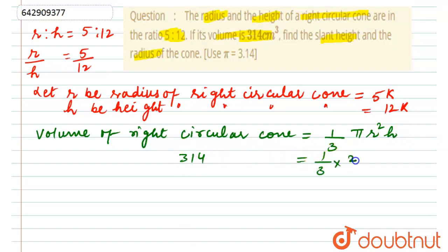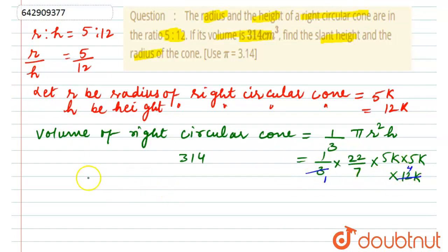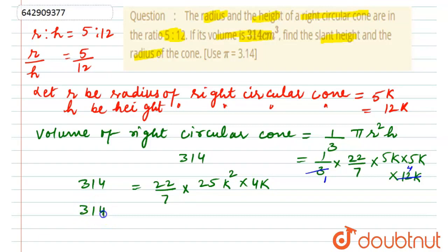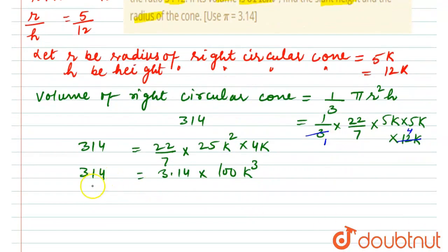So: 314 = (1/3) × (22/7) × (5k)² × (12k). That gives us (22/7) × 25k² × 12k = 300k³ × (22/7). Simplifying: 314 = (22/7) × 25 × 12 × k³, which equals 314 × k³ approximately, giving k³ = 1.